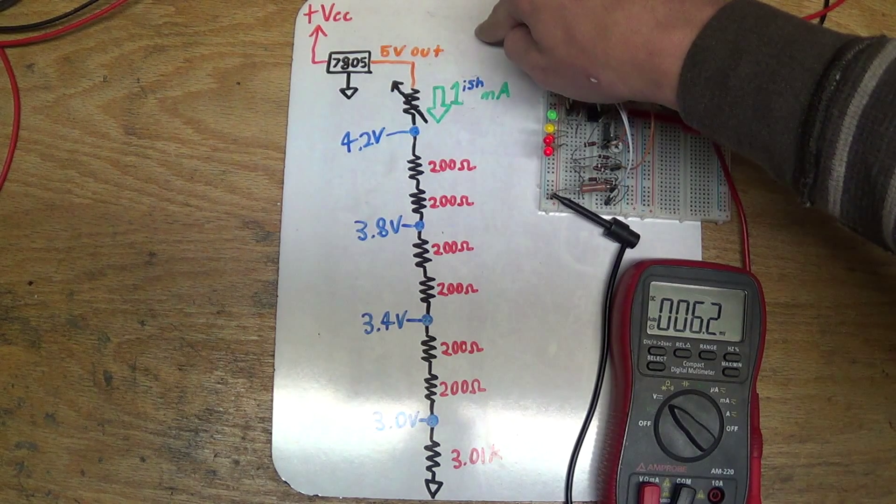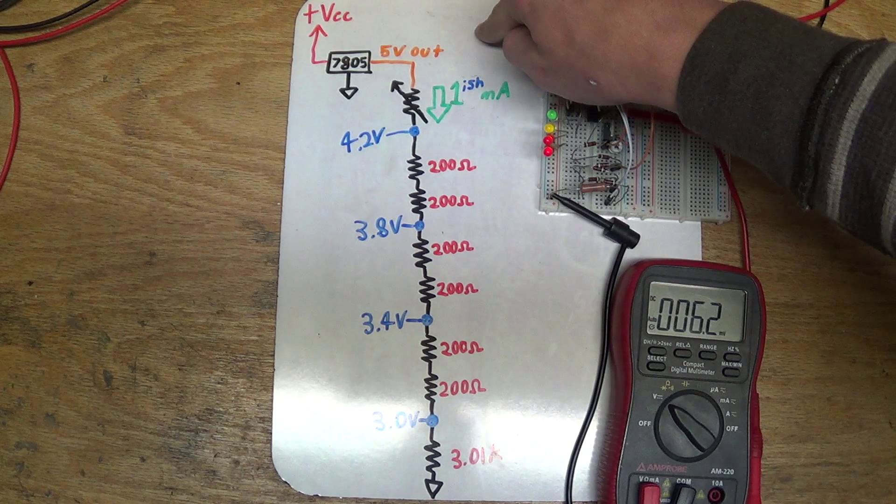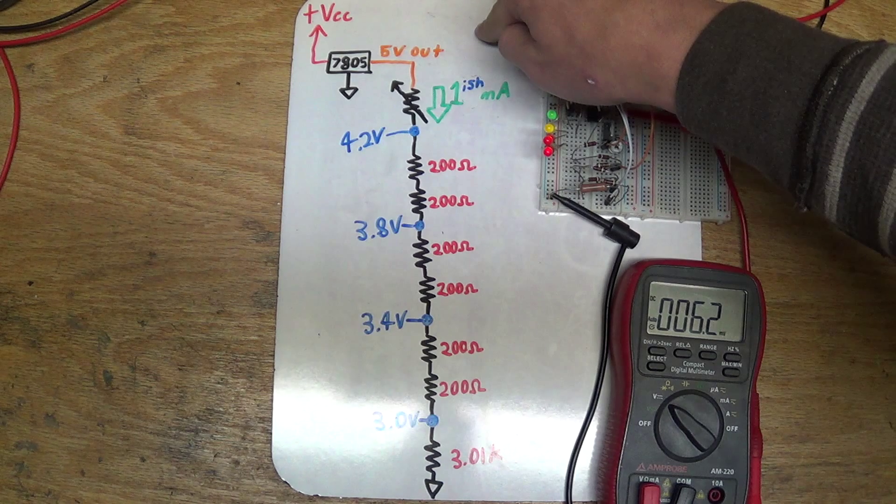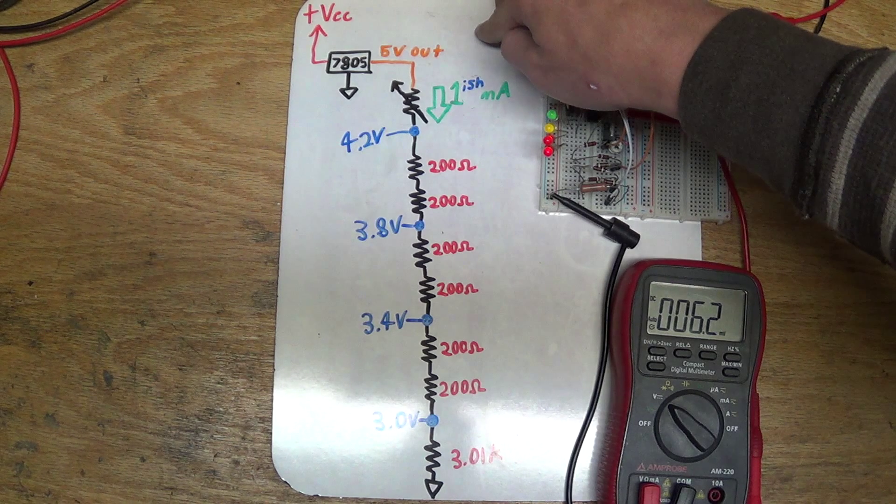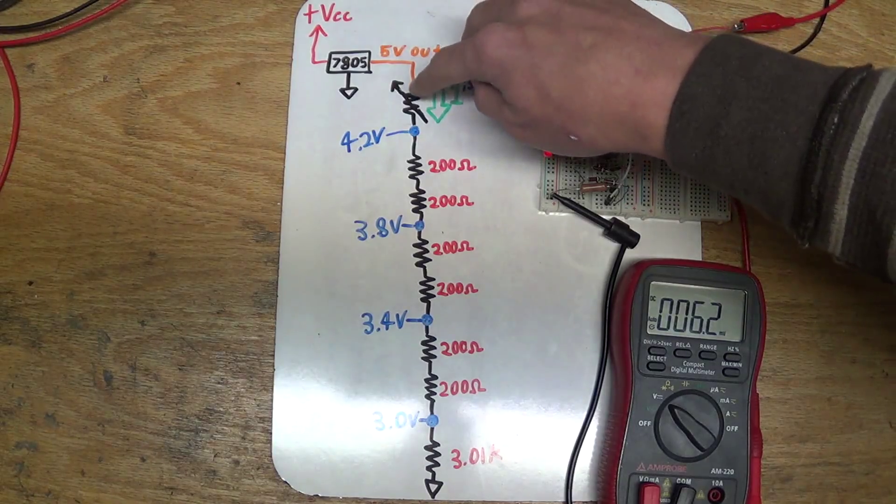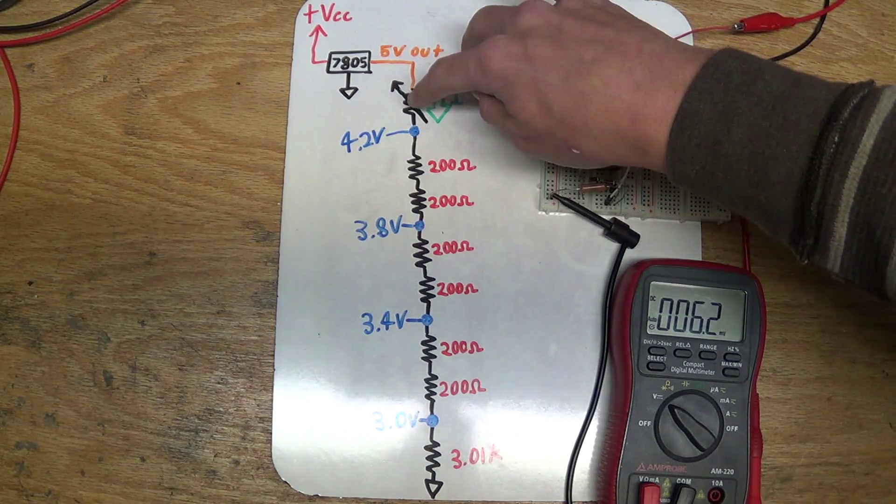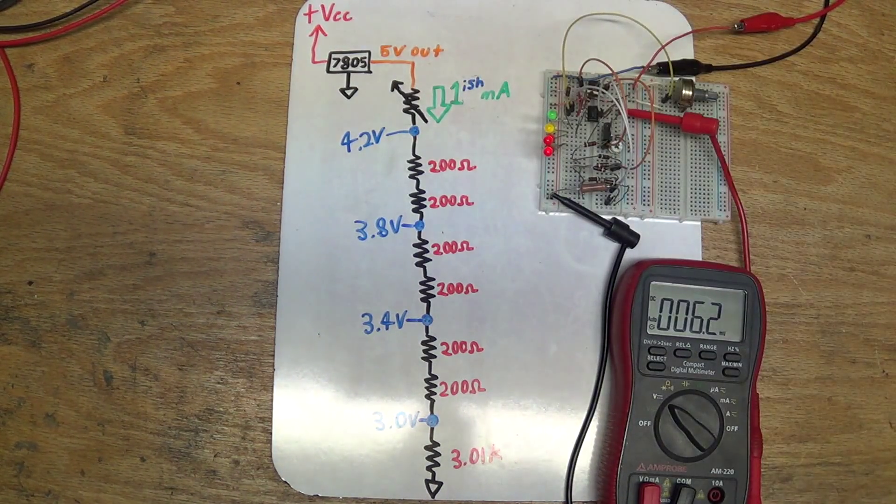Now as for my current source, you can see I decided to use a 7805 voltage regulator that has a constant voltage output of 5 volts. I then went ahead and used a variable resistor, so that I can adjust the amount of current that's going through here, so it's one milliamp, or thereabouts.